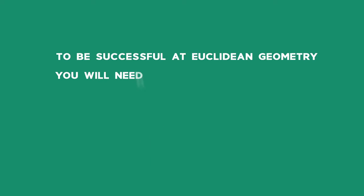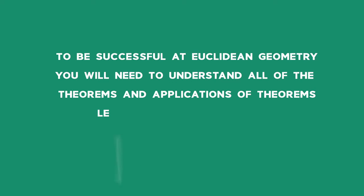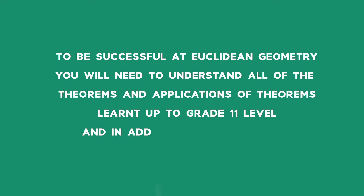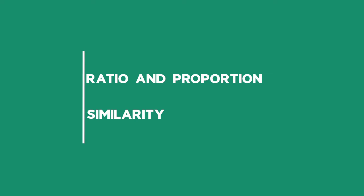To be successful at Euclidean geometry, you will need to understand all the theorems and applications of theorems learnt up to grade 11 level, and in addition, the concepts of ratio and proportion, and similarity.